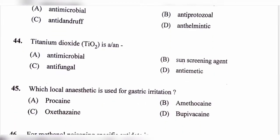Question number 44. Titanium dioxide (TiO2) is a/an: option A, Antimicrobial; option B, Sunscreening agent; option C, Antifungal; option D, Antiemetic. The correct answer is option B, Sunscreening agent. Titanium dioxide is used in sunscreens mainly due to its ability to reflect and scatter ultraviolet radiation.